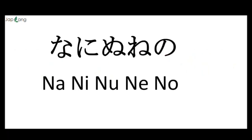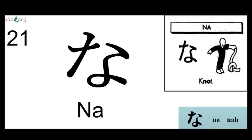Today we will be learning these 10 new alphabets. This is the NA group. The new alphabets in the NA group are NA, NI, NU, NE, NO. This is NA — the 21st character out of 46. You can see on the right-hand side one person making the sound NA. The sound is NA.